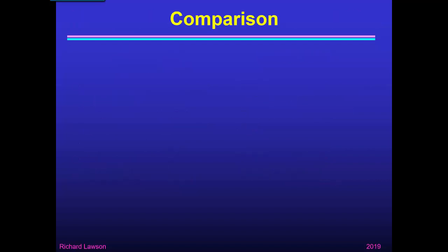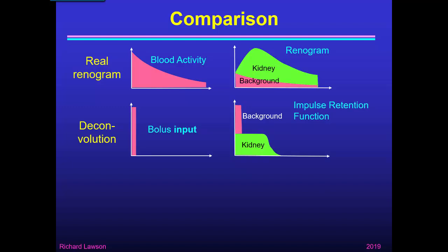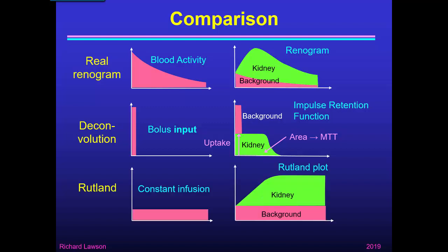But what if we could get mean transit time from the Rutland plot? Comparing these techniques: the real renogram has blood activity that falls with time, producing a renogram with a falling background. If we apply deconvolution, we simulate a bolus input where all the blood activity comes in right at the beginning, and in the impulse retention function the background is a spike at the beginning while the kidney activity is constant before it falls. The initial rise is kidney uptake and the duration — more formally, the area under that kidney portion of the curve — gives us the mean transit time.